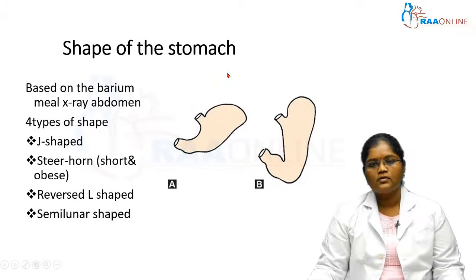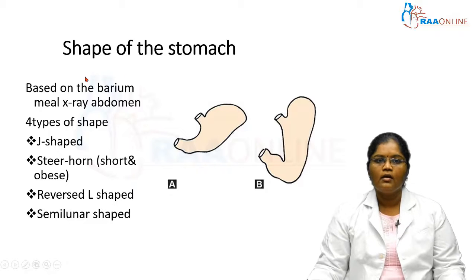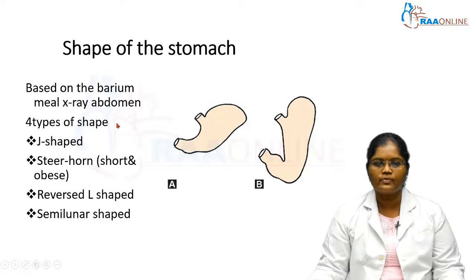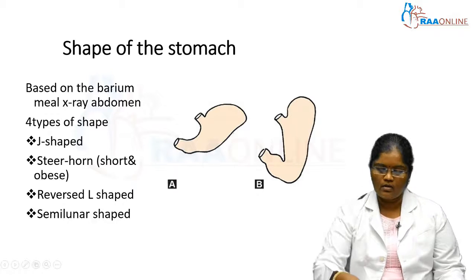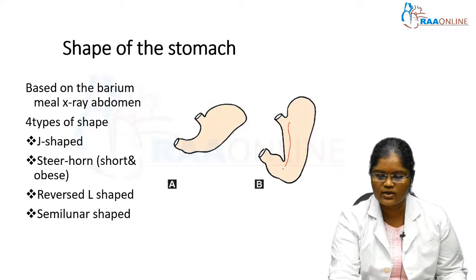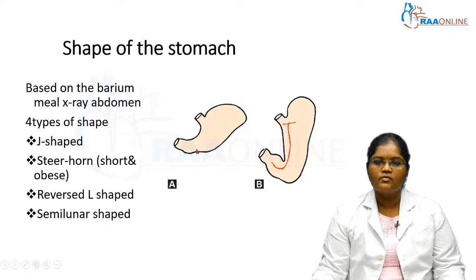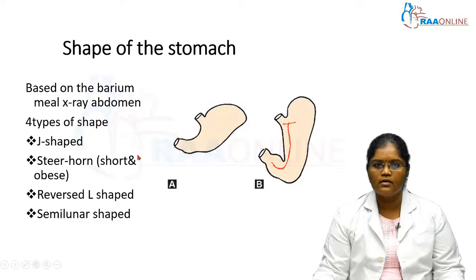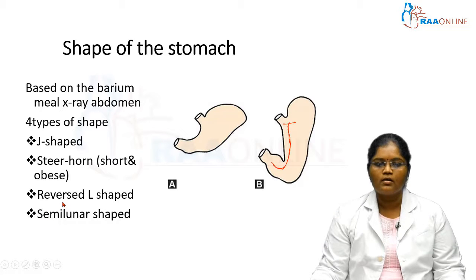The shape of the stomach varies for each individual and is studied using barium meal X-ray of the abdomen. Four types of shapes have been identified. The most common shape is the J shape. The steer horn shape is transversely oriented and present in short and obese individuals. The other two shapes are the reversed L shape and the semilunar shape.